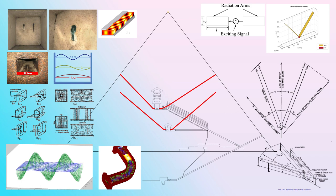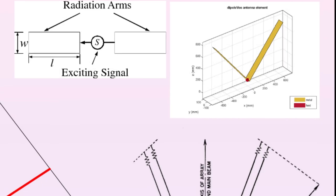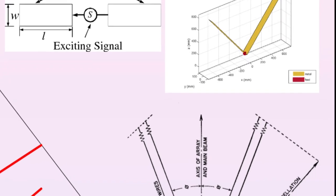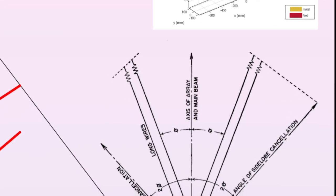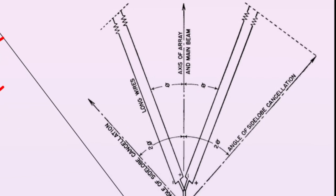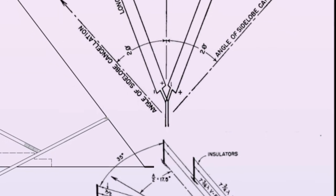Everything in the pyramid is behaving like a waveguide — we're dealing with megahertz, gigahertz, extremely high frequencies. In radio astronomy we use a configuration called a dipole or V-dipole antenna, and the Great Pyramid is an exact representation of that V-dipole setup. When you want to transmit radio waves a long distance, you need a carrier signal.